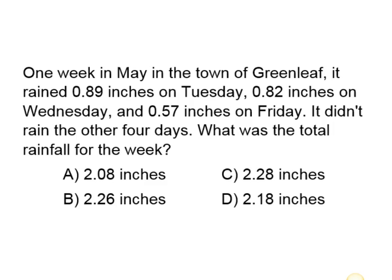Let's go over one more problem dealing with decimals. One week in May, in the town of Greenleaf, it rained 0.89 inches on Tuesday, 0.82 inches on Wednesday, and 0.57 inches on Friday. It didn't rain the other four days. What was the total rainfall for the week? Answer choice A is 2.08 inches, B is 2.26 inches, C is 2.28 inches, and D is 2.18 inches.